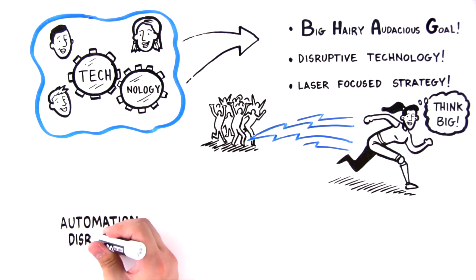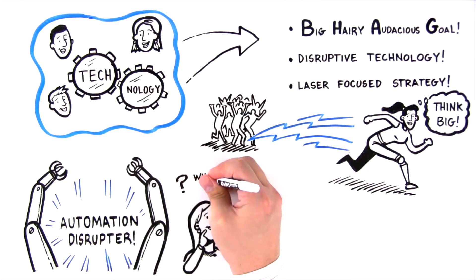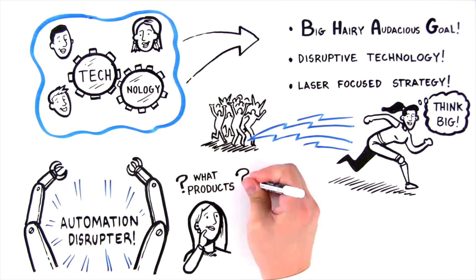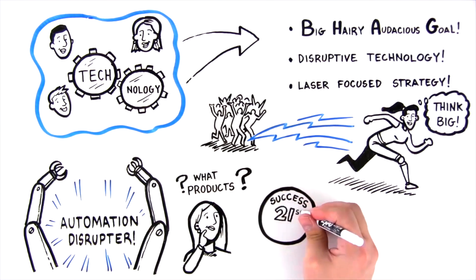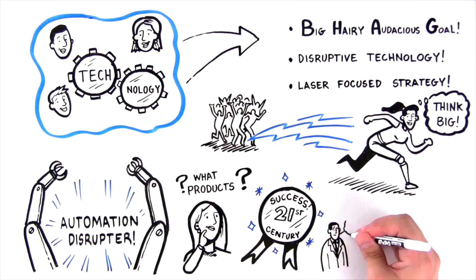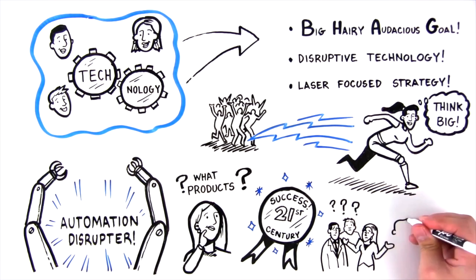As an automation disruptor, understanding what products to integrate into your machine is critical to your success in the 21st century. But with so many emerging technologies, chances are you need someone to help lead the way.